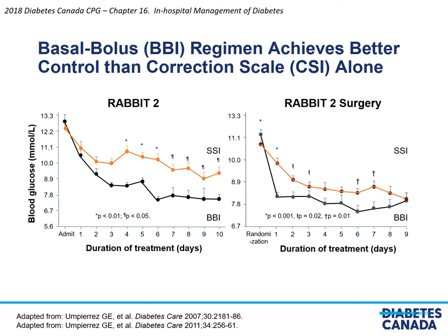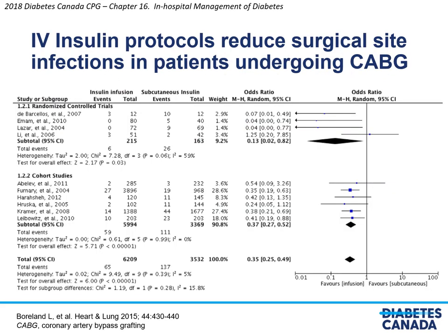There are good data to support the concept that basal bolus insulin achieves better control than correction scale insulin alone. These are the data from the RABBIT-2 studies. The left panel shows results from the medical ward and the right panel from the surgical ward. Patients were randomized to receive either correction scale insulin alone or a basal bolus insulin protocol. The y-axis shows blood glucose control and the x-axis shows duration of treatment. It is quite clear from these two graphs that the basal bolus insulin regimen achieves much better glucose control and maintains that control much better than correction scale alone. Additionally, IV insulin protocols were significantly associated with the reduction in surgical site infections in patients undergoing coronary artery bypass surgery.